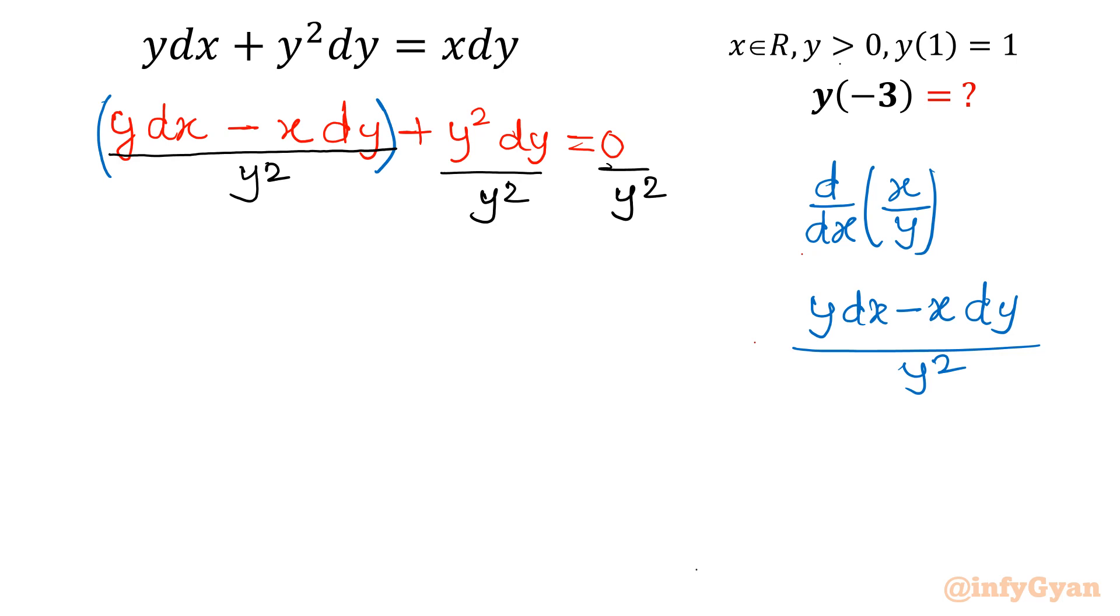Now this looks nice. Now this term is d over dx of this bracket. This bracket is d over dx of x over y. This formula is called quotient rule in differentiation. So this bracket we will write as d over dx of x over y plus this y squared will get cancelled out, dy equals 0.